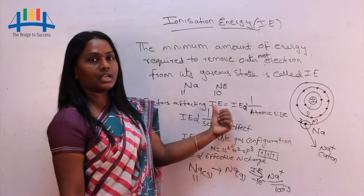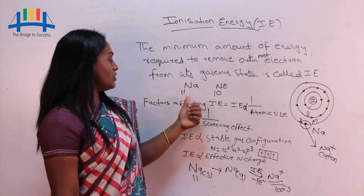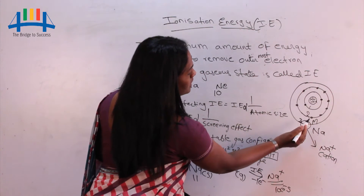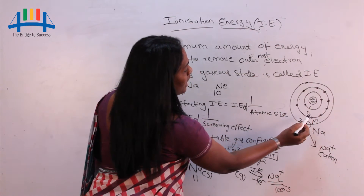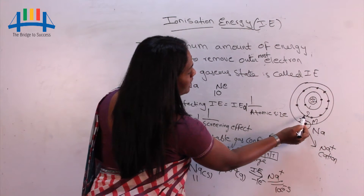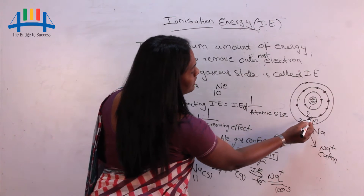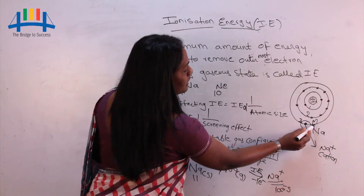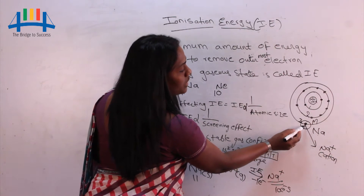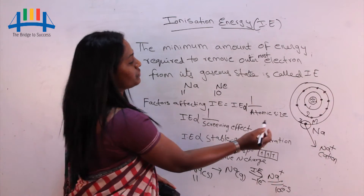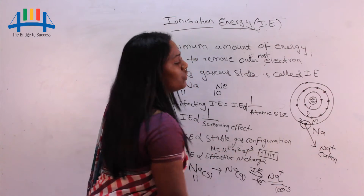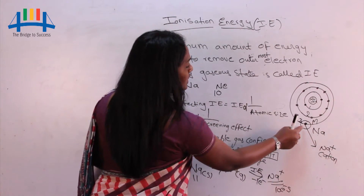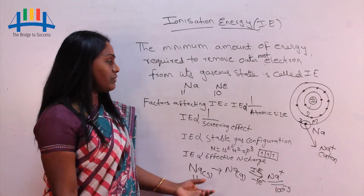For sodium with 11 electrons, its nearest noble gas is neon with 10 electrons, so to get a neon-like configuration it should lose one electron. The structure of sodium has the first shell with 2 electrons, the second shell with 8 electrons, and the third shell with 1 electron — 2+8+1=11. The third shell, which is the M shell, is the outermost shell, and the one electron there is called the outermost electron of sodium.